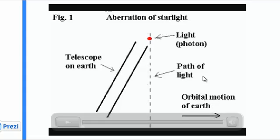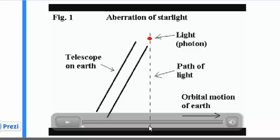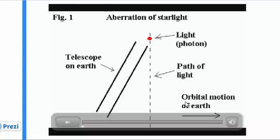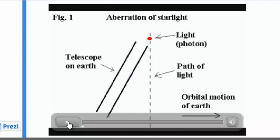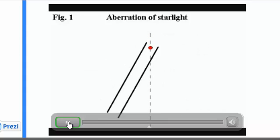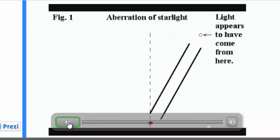In this illustration, light is coming from the top and goes straight down to the Earth. The Earth itself moves with the orbital motion of 30 km per second. The telescope is tilted to make sure the light will pass through the telescope. If we look at the image, light passes through the telescope.